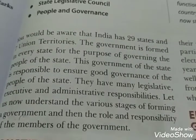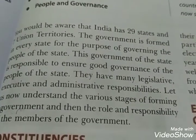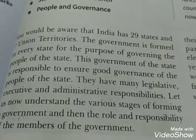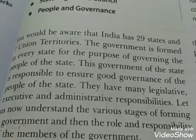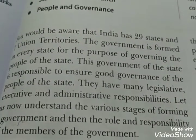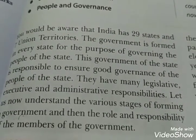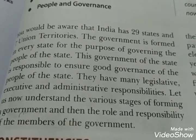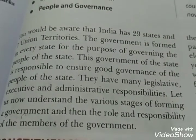India is a very big country — the seventh largest by area and the second largest by population in the world. So for such a big country, if there is only a central government, it is not possible to control the whole country. Therefore, the country is divided into different states. At present there are 28 states and 9 union territories.